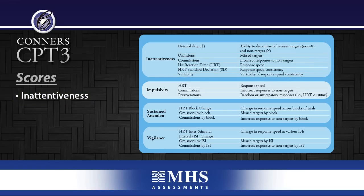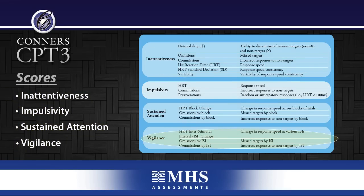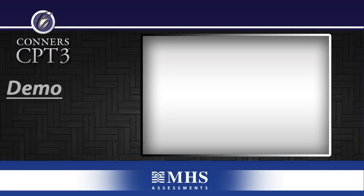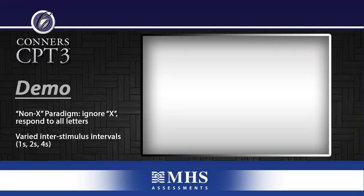These four aspects are inattentiveness, impulsivity, sustained attention, and vigilance. During the 14-minute 360-trial administration, respondents are required to push the spacebar when any letter except X appears. Additionally, the paradigm has been revised with a new ratio of non-targets to targets to improve the test's sensitivity to impulsivity problems.